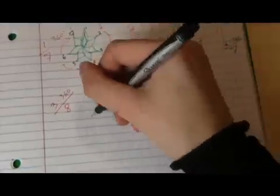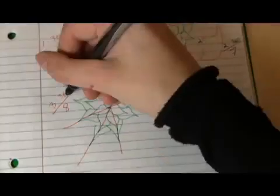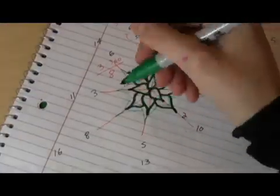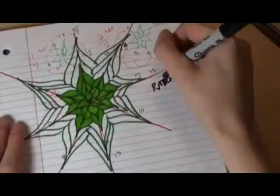But what if there were a fraction that never completely overlapped? For any rational fraction, eventually the star will close. But what if you used an irrational number, the kind of number that can't be expressed as a whole-numbered ratio? What if you used the most irrational number?